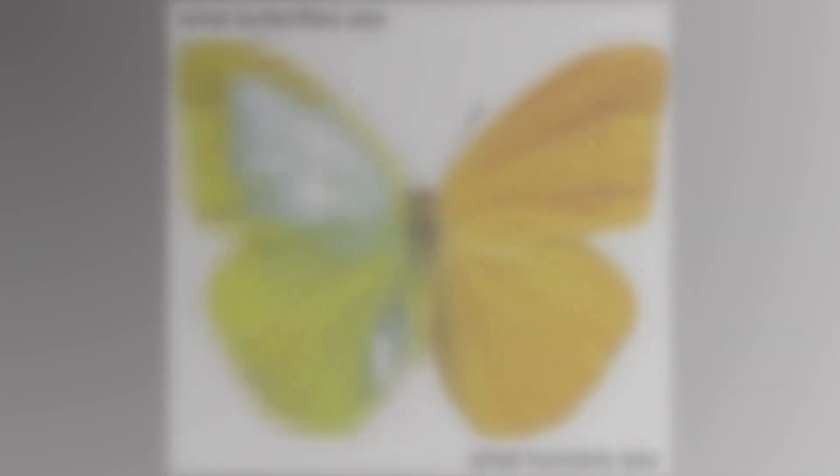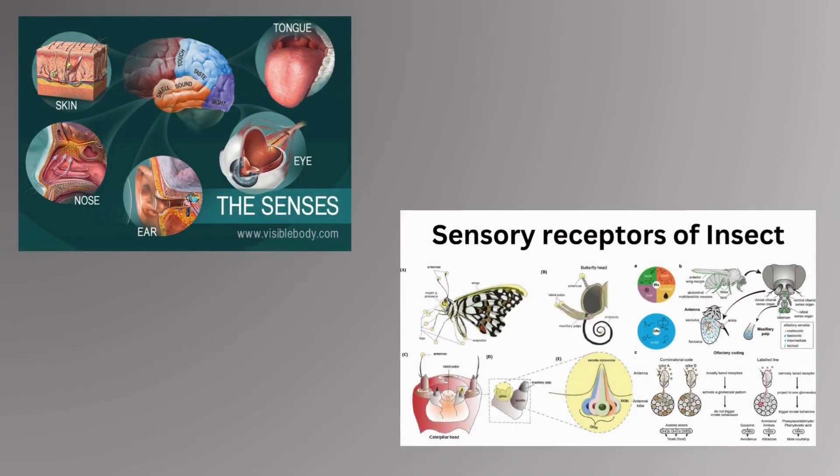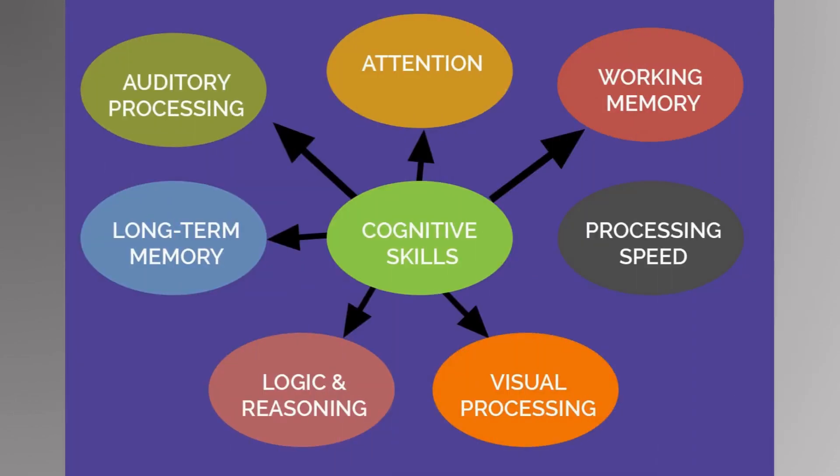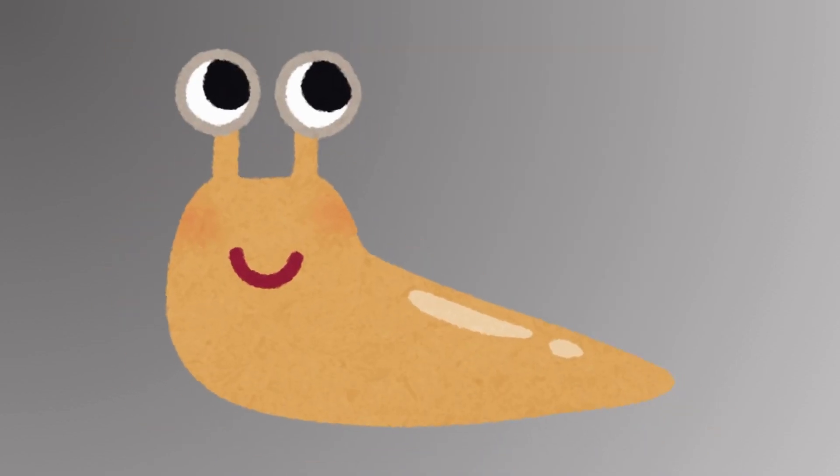Bug players and human players perceive the world in vastly different ways due to differences in sensory systems, cognitive abilities, and survival needs. Here's a breakdown of the comparison. How bugs perceive the world.